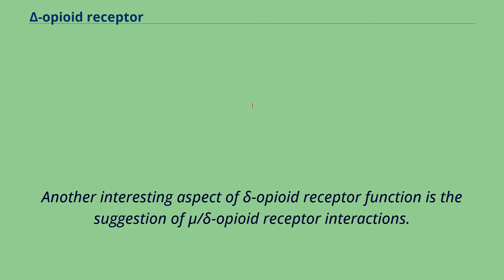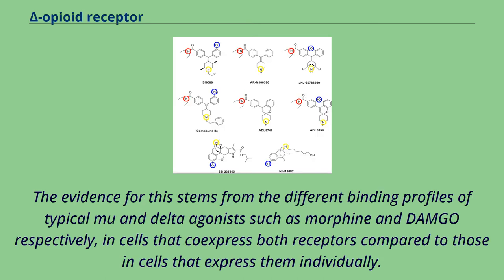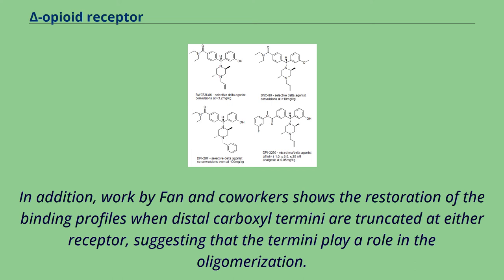Another interesting aspect of Delta opioid receptor function is the suggestion of Mu-Delta opioid receptor interactions. At the extremes of this suggestion lies the possibility of a Mu-Delta opioid receptor oligomer. The evidence for this stems from the different binding profiles of typical Mu and Delta agonists such as morphine and DANGO respectively, in cells that co-express both receptors compared to those in cells that express them individually. Work by Fann and co-workers shows the restoration of the binding profiles when distal carboxyl termini are truncated at either receptor, suggesting that the termini play a role in the oligomerization.